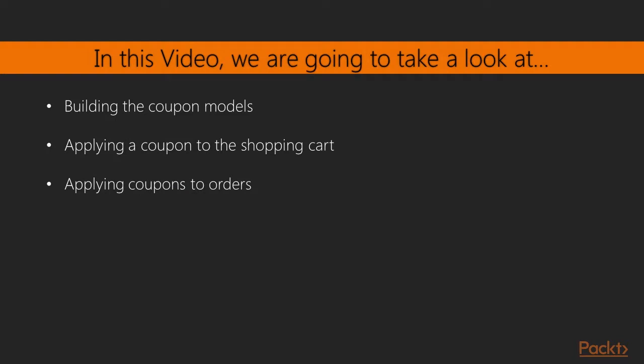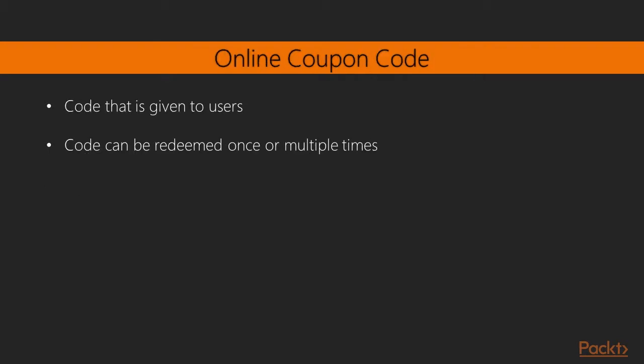In this video we'll see how to build the coupon models. Next we'll apply a coupon to the shopping cart and then apply these coupons to orders. Many online shops give out coupons to customers that can be redeemed for discounts on their purchases. An online coupon usually consists of a code that is given to users, which is valid for a specific time frame. The code can be redeemed one or multiple times.